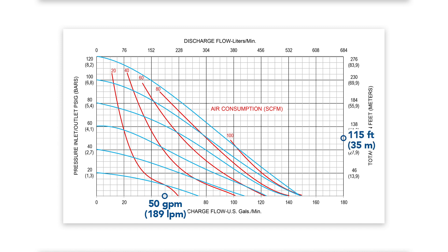To find out how well the AODD pump will perform, utilize the performance curve by finding the 50 gallons per minute along the horizontal axis, then follow the line up to the 115 feet of head along the vertical axis.